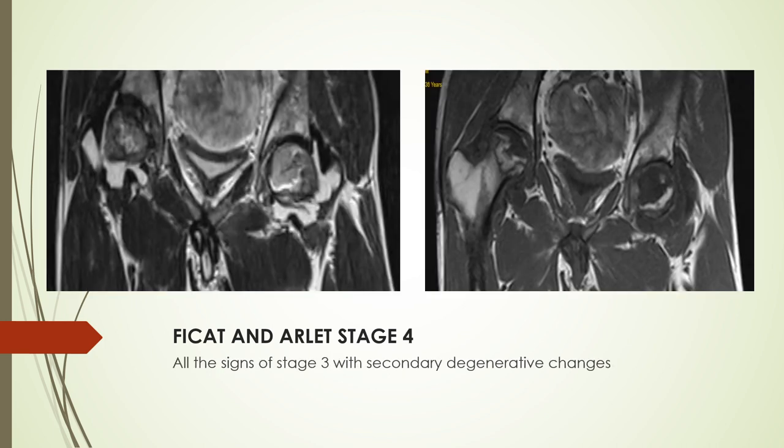In stage 4, all the signs of stage 3 are present along with secondary degenerative changes in the surrounding acetabulum and femur, as seen in these T1 and T2 coronal images.